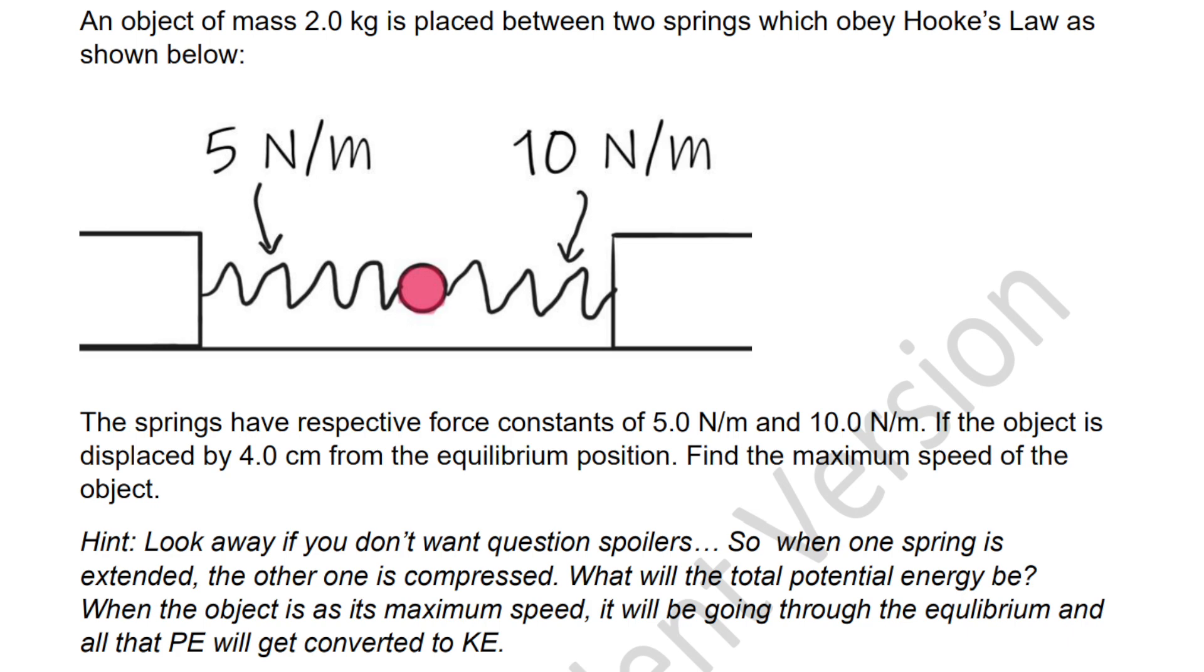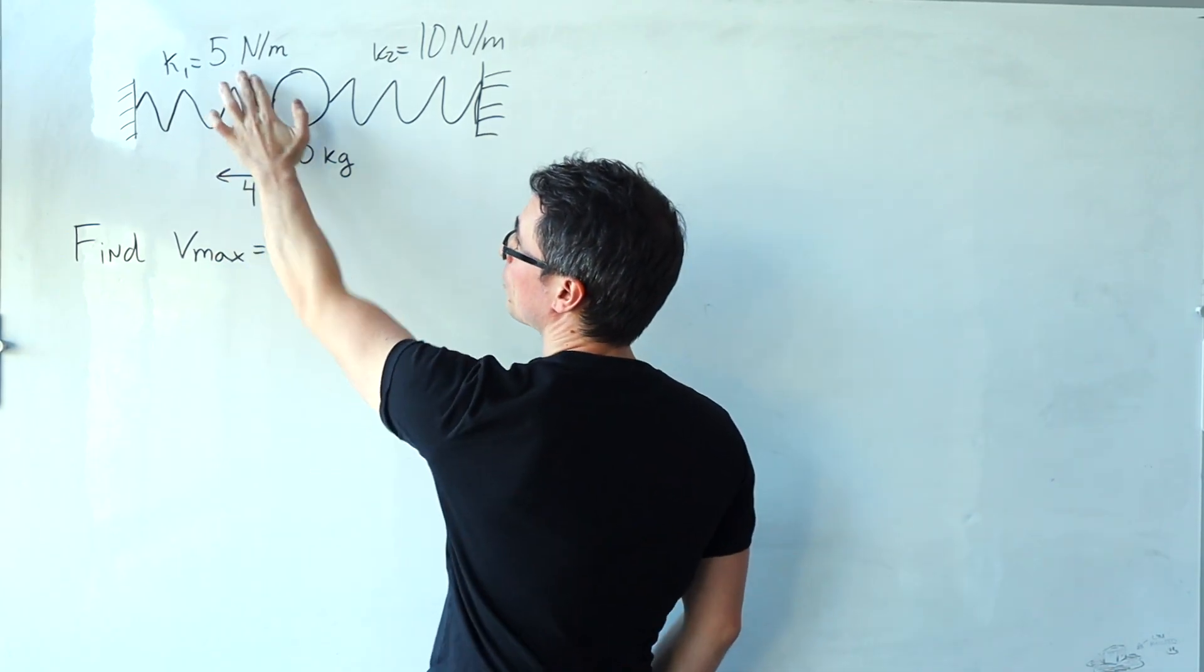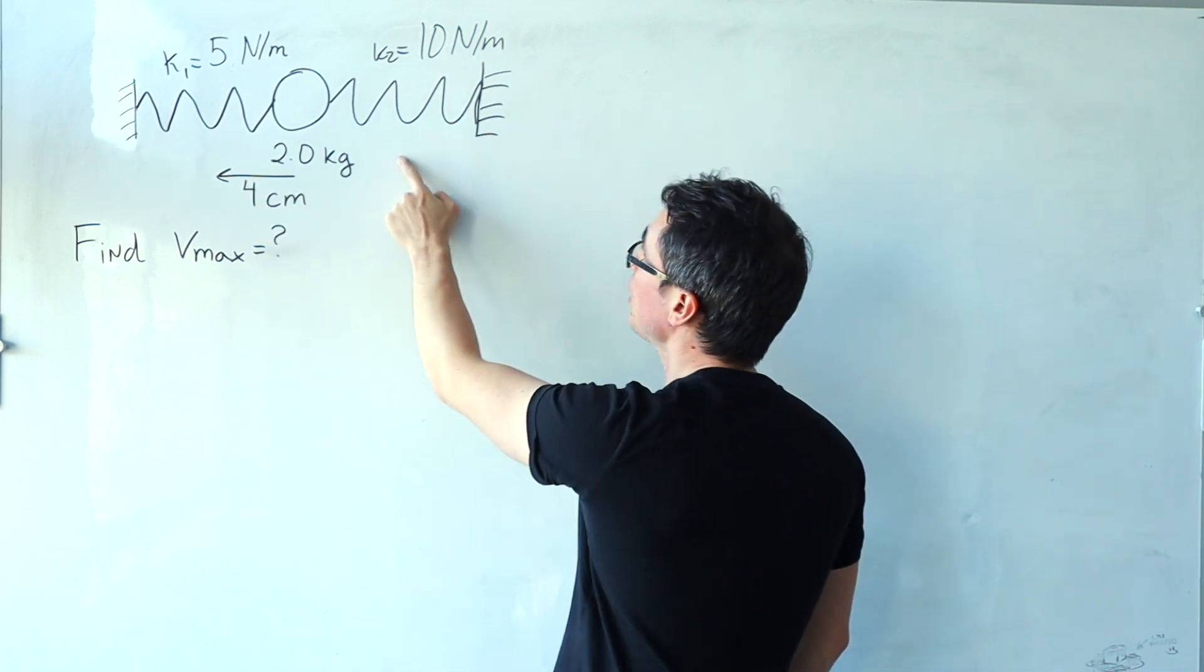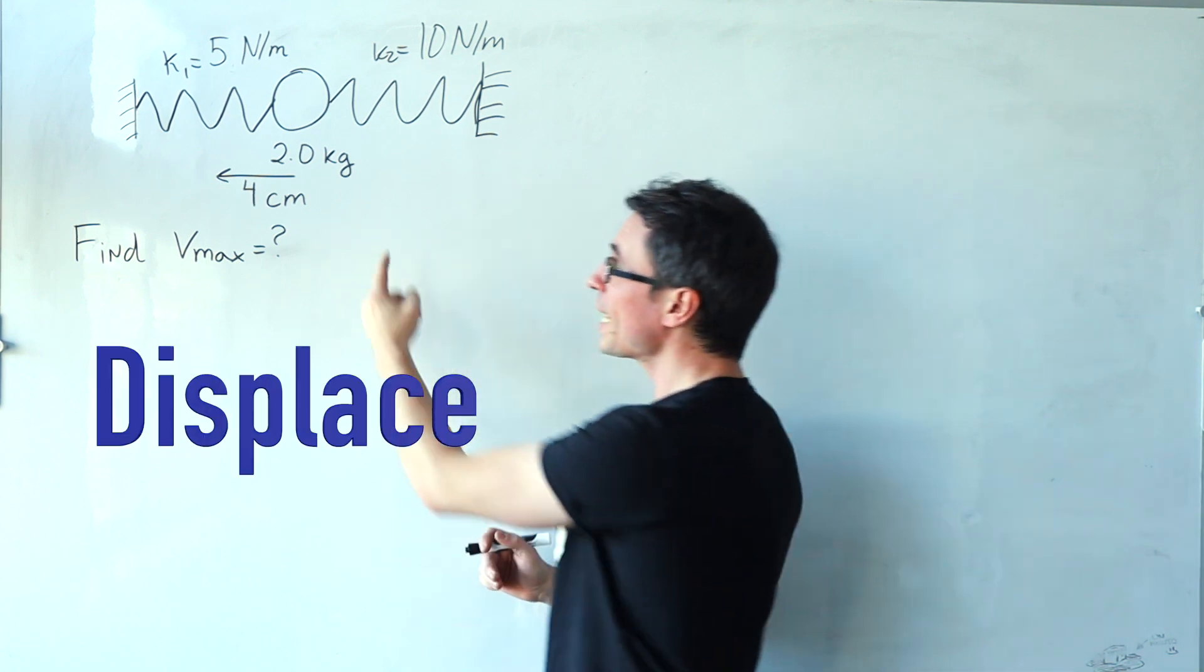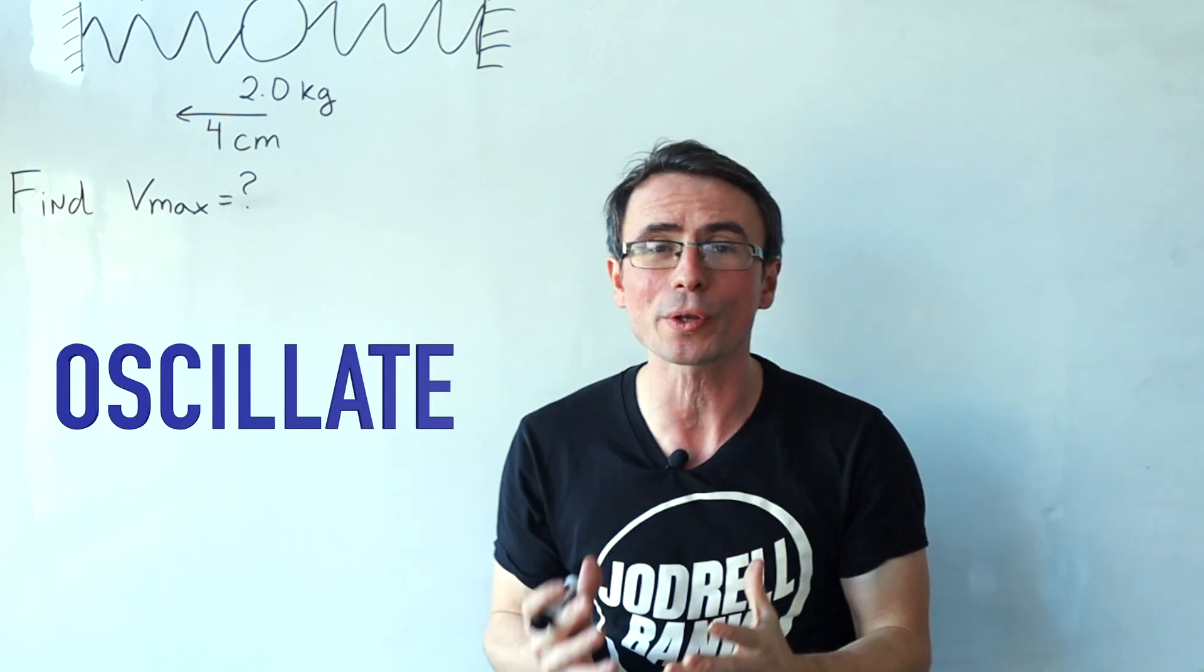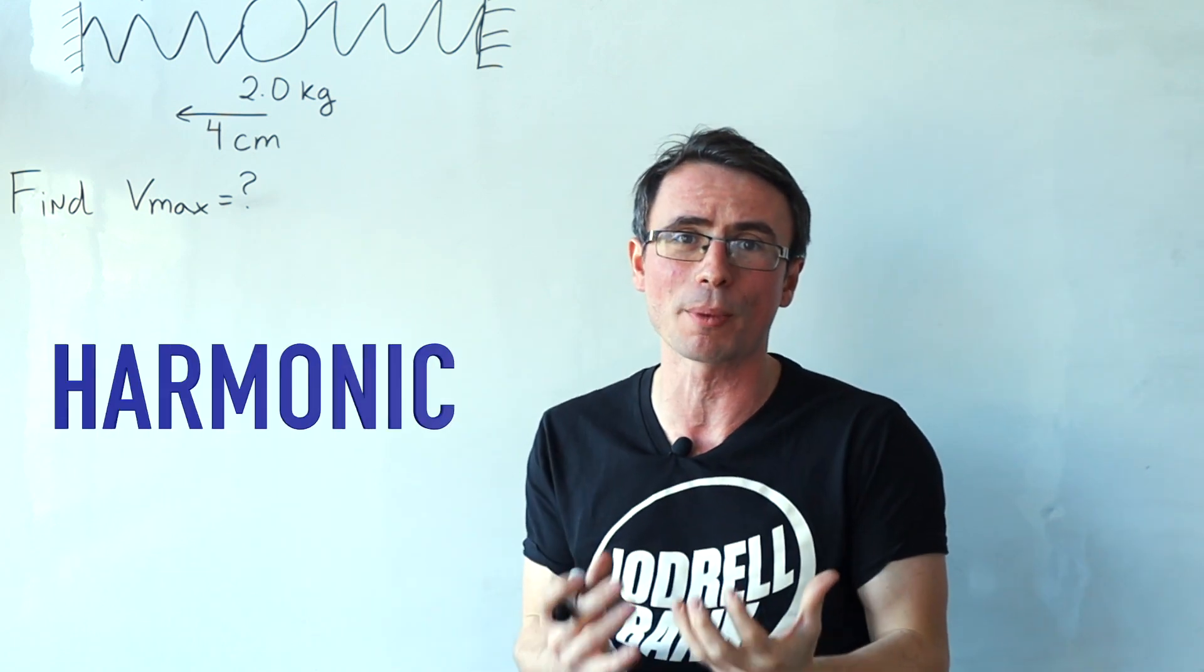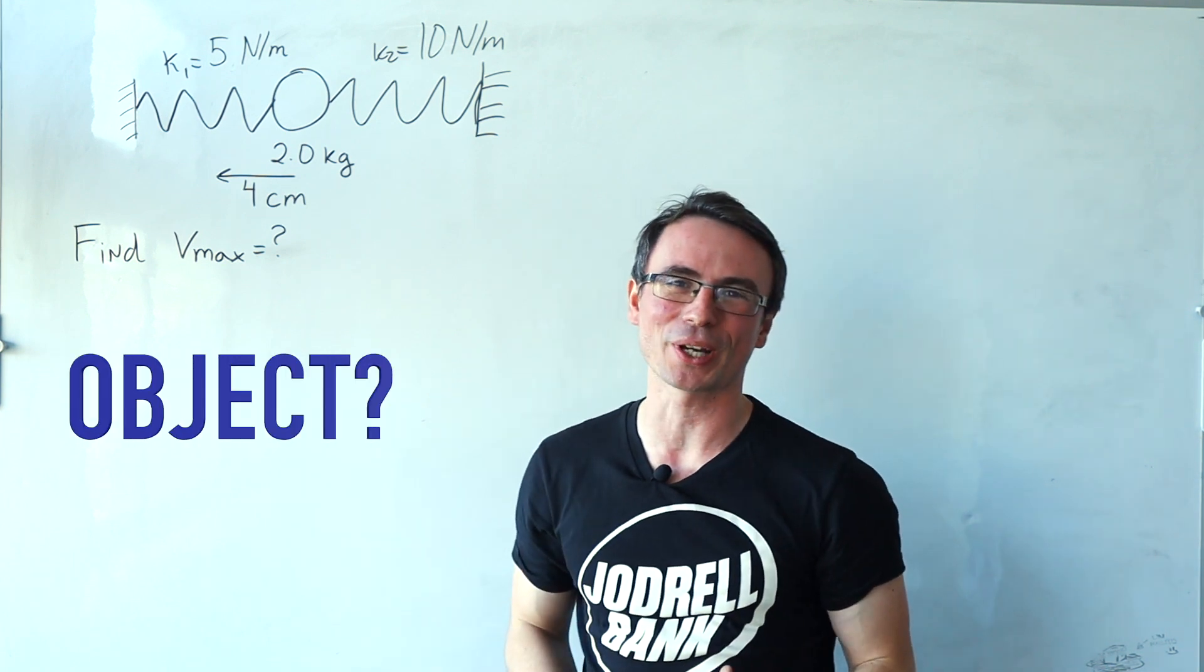In this problem, we have a two kilogram mass that is connected to one spring with this spring constant on the left and another one on the right with double the spring constant. We displace the object by four centimeters to the left and then we let it oscillate and perform simple harmonic motion. How do we find the maximum speed of the object?